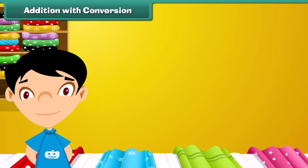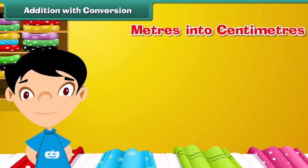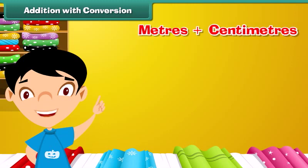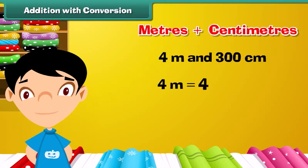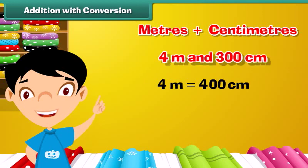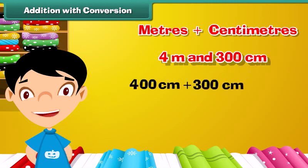Addition with conversion. Now that we know how to convert meters into centimeters, let us learn to add meters and centimeters. Let us add 4 meters and 300 centimeters. First, convert meters into centimeters: 4 meters is equal to 4 into 100 centimeters, which equals 400 centimeters. So, 4 meters plus 300 centimeters equals 400 centimeters plus 300 centimeters, which equals 700 centimeters.